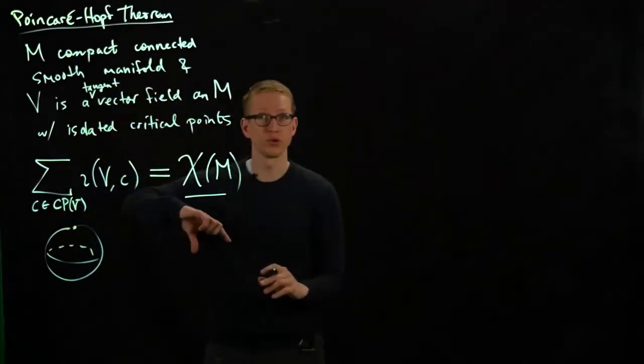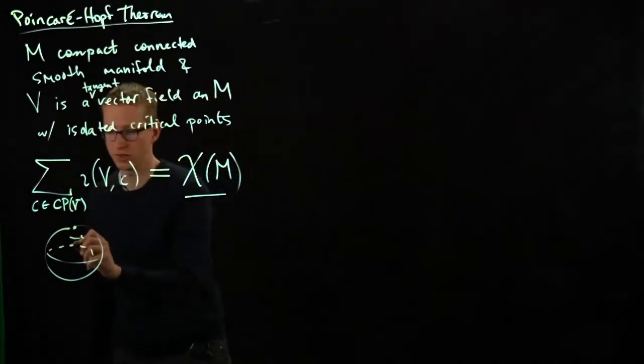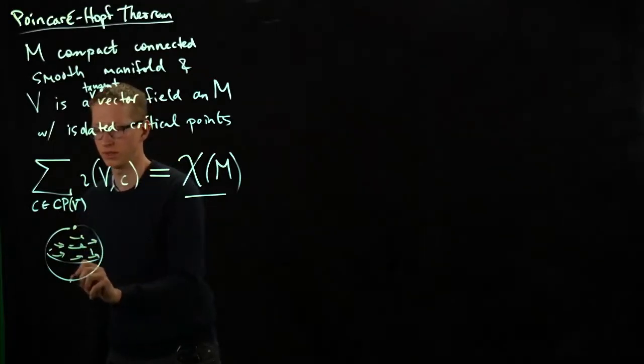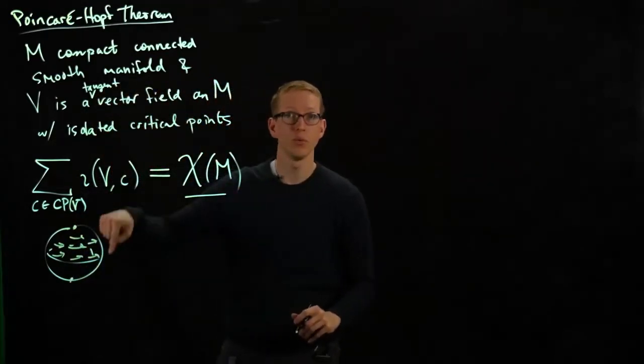let's say, if you take that rotation vector field, so I'm rotating in this direction, let's say, that gives me a vector field, and there are two isolated critical points, one at the top, one at the bottom.